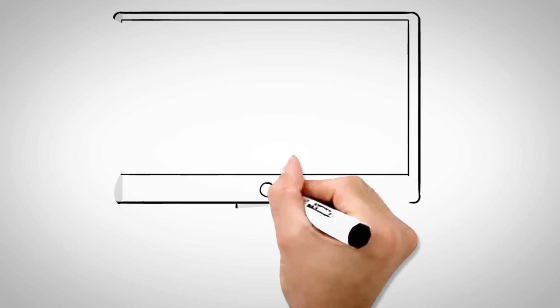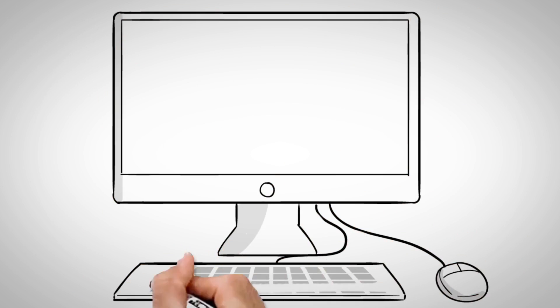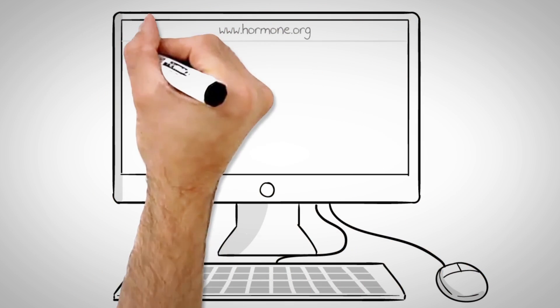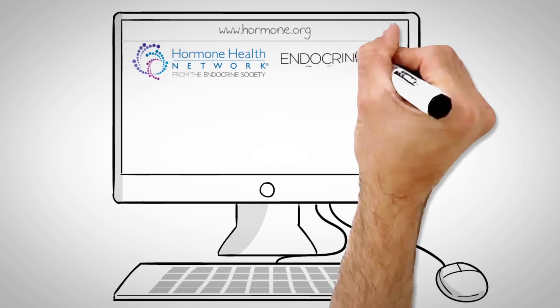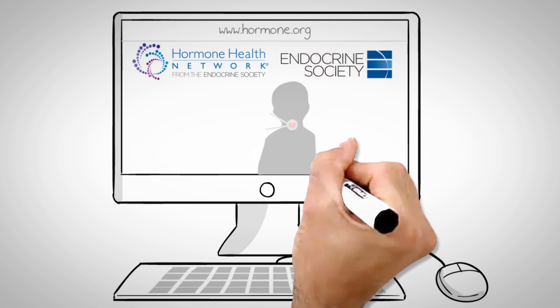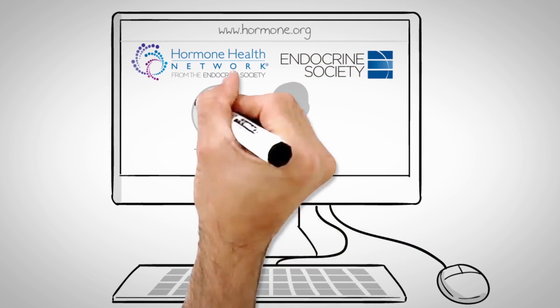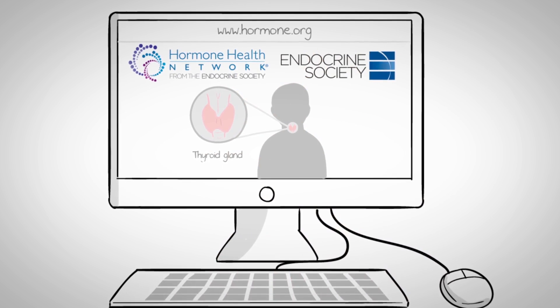...they do some internet research. They visit hormone.org and learn that the thyroid is a butterfly-shaped gland at the front of the neck. It releases a hormone, thyroxine, that influences almost all of the metabolic processes in the body.